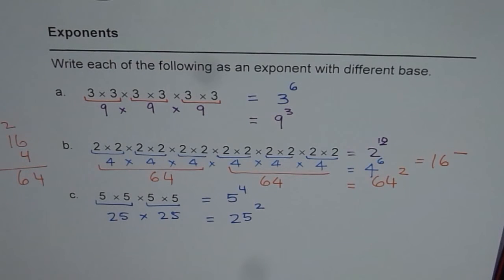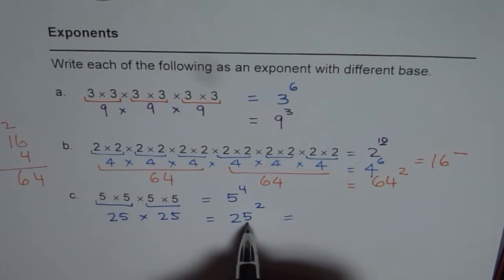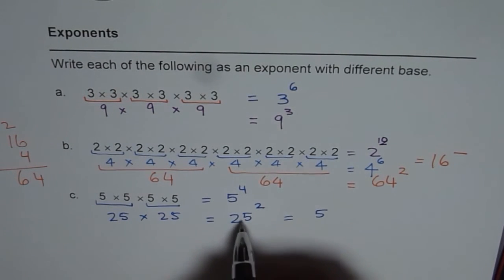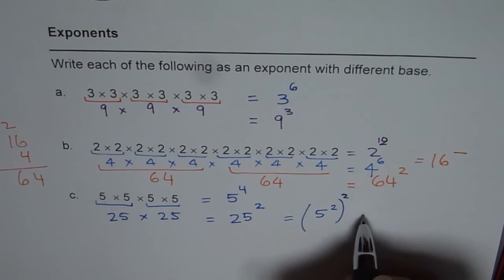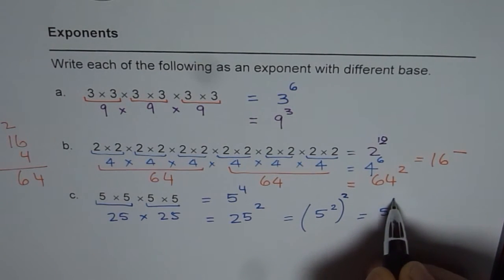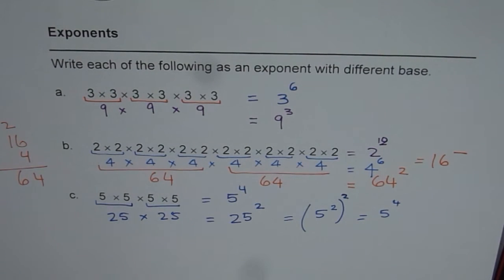Now here is the technique. We could also start with 25 squared. What is 25? Well, 25 is 5 squared. So we can write 25 as 5 squared, and we have this square on top of it. Then you multiply the exponents and get 5 to the power of 2 times 2, which is 4. That is also a way of doing it. So you have learned how to write a number with different combinations of their base and exponents. Thank you.